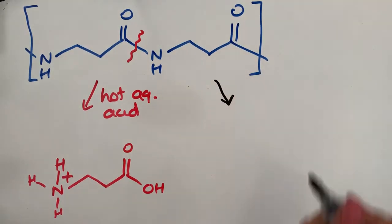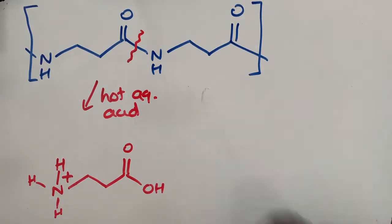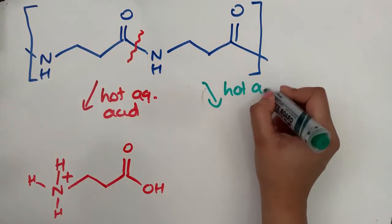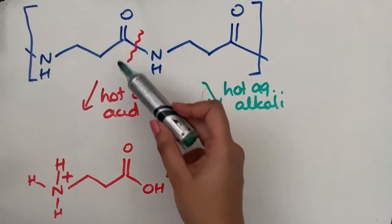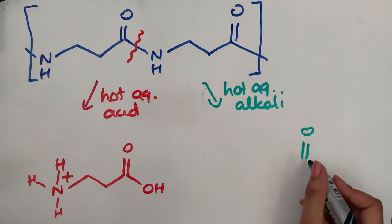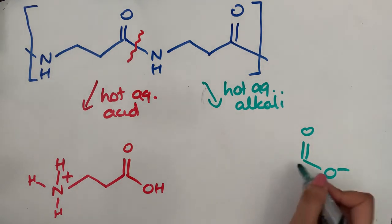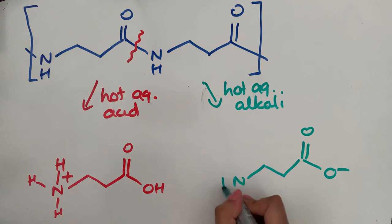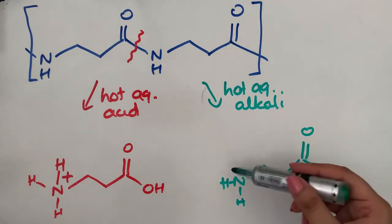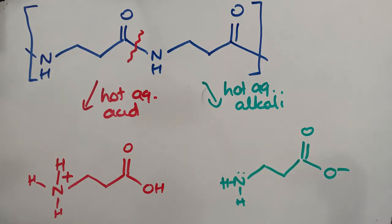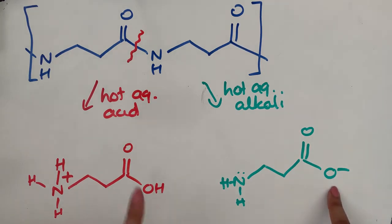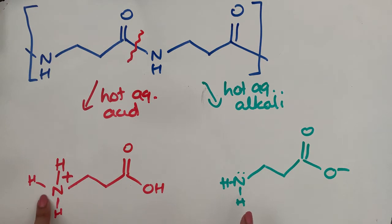If we now do the alkaline hydrolysis of this polyamide — at one end, remember, under alkaline conditions we never form the carboxylic acid; we always form the carboxylate ion. And at the other end, the nitrogen is not protonated because under alkaline conditions you don't have H⁺ ions flying around. So under alkaline conditions you always form the carboxylate, and under acidic conditions you always form the carboxylic acid. Under acid conditions you always form the ammonium ion, and under alkaline conditions you just form the amine.